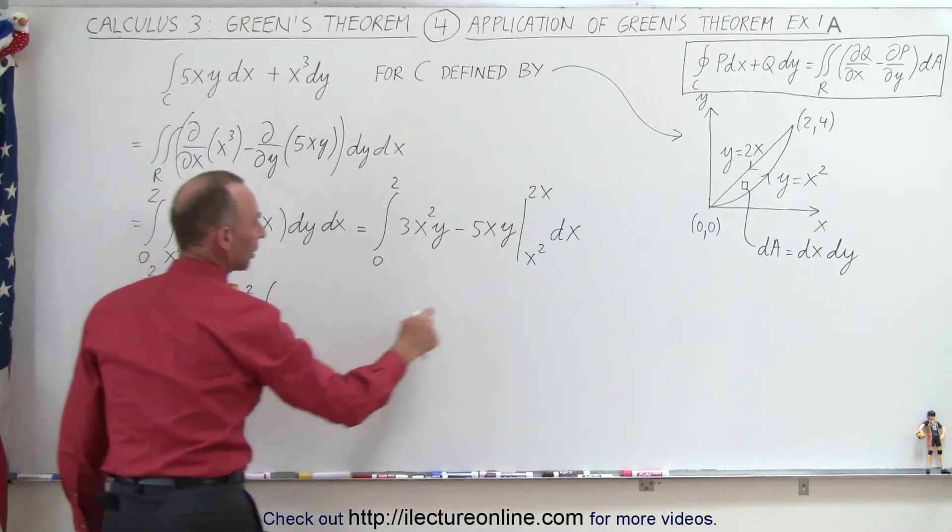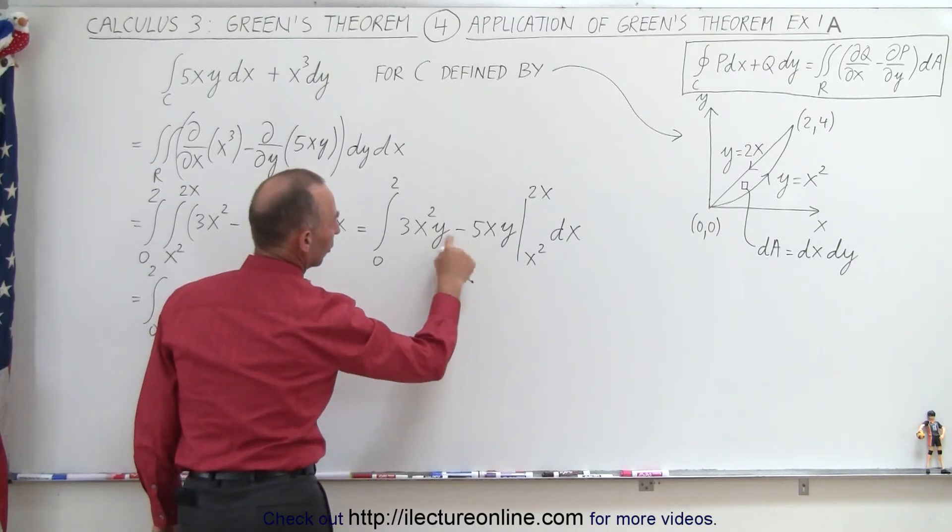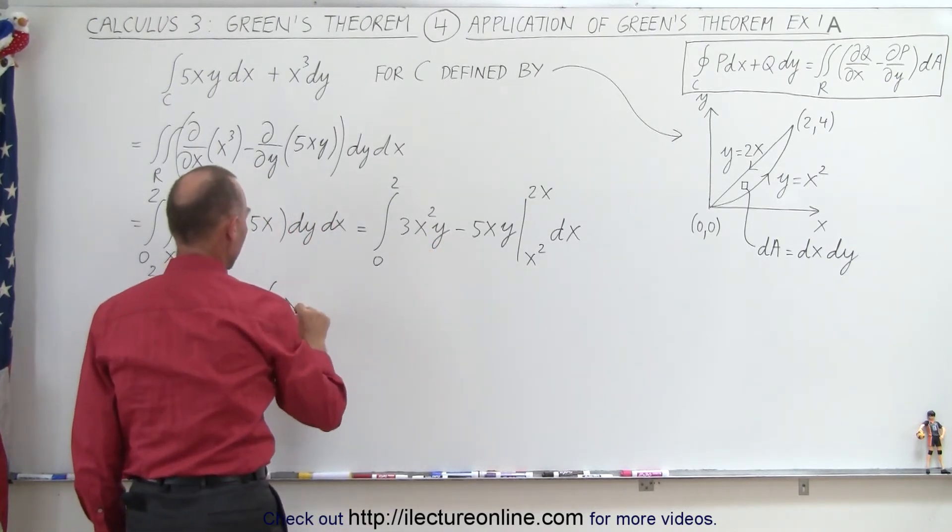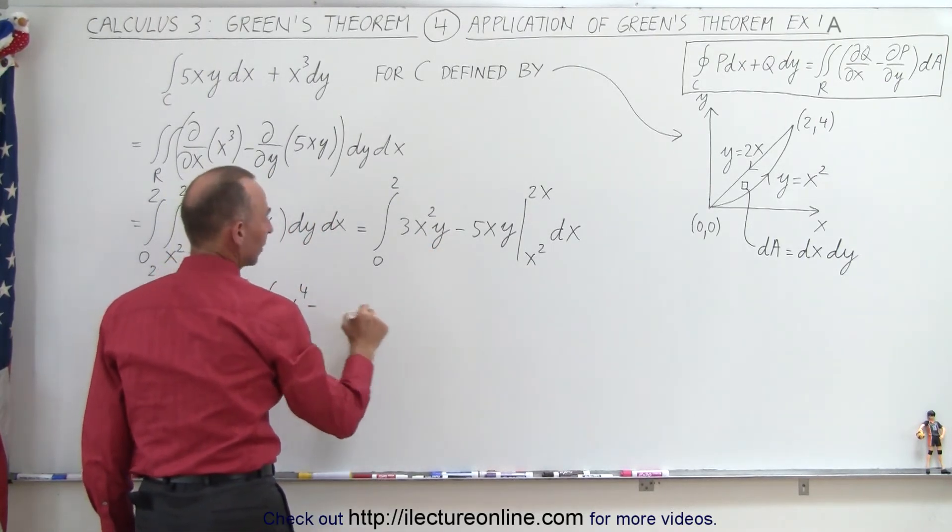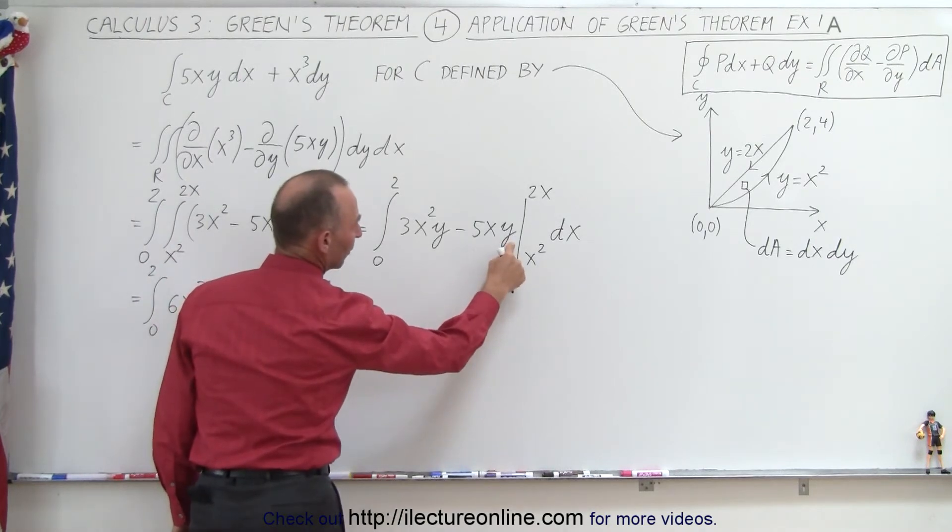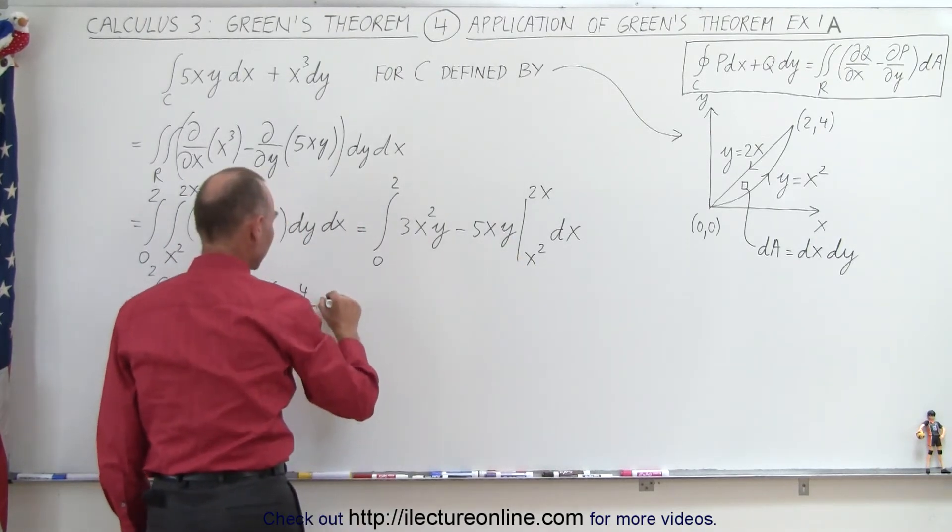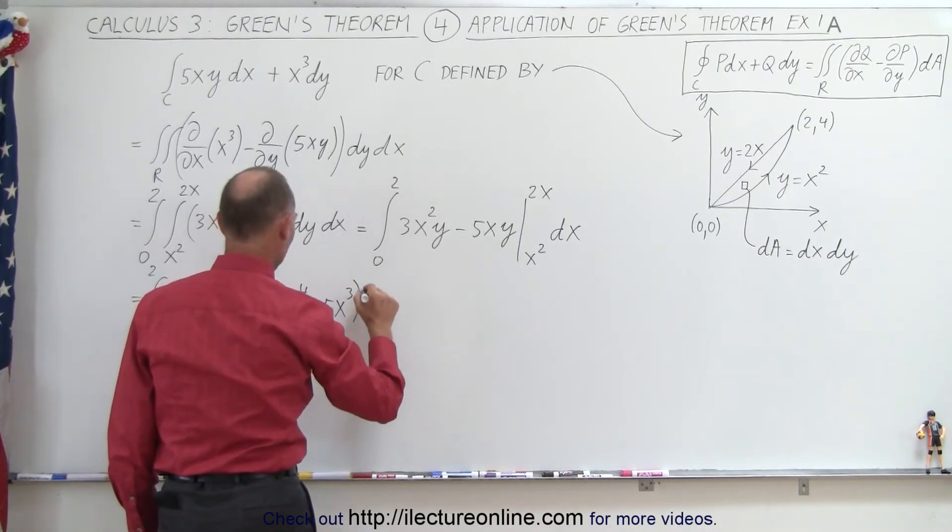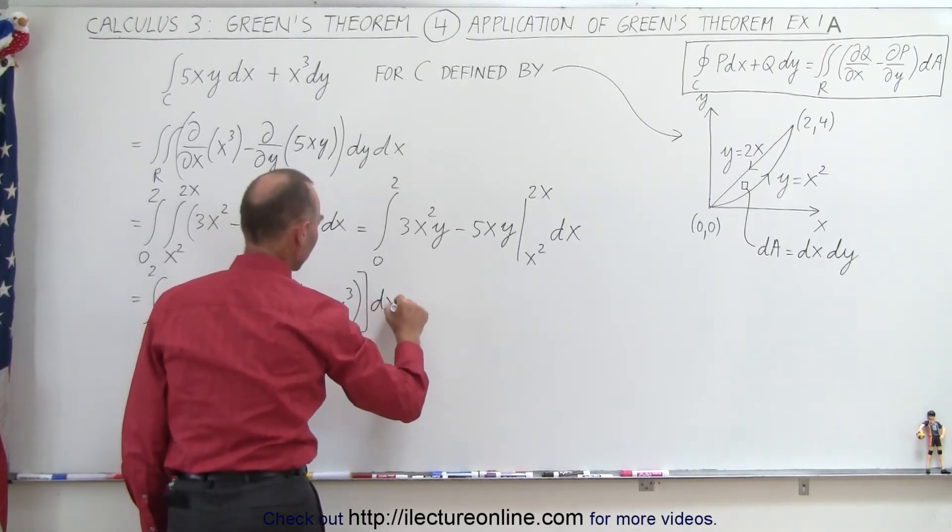Now we subtract from that when we plug in the lower limit. So plug in the lower limit, we get x² times x² is x⁴. So that's 3x⁴ minus, plug in x² here, we get 5x³. We get a minus there, -5x³. And the whole thing would still be times dx.